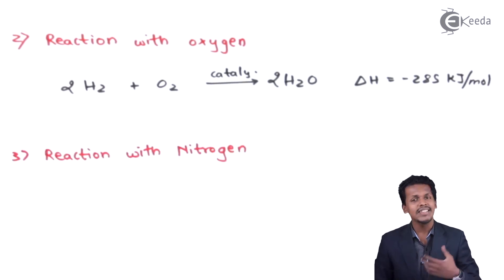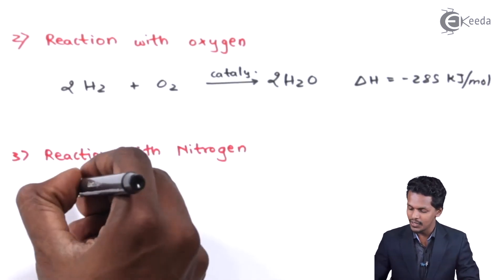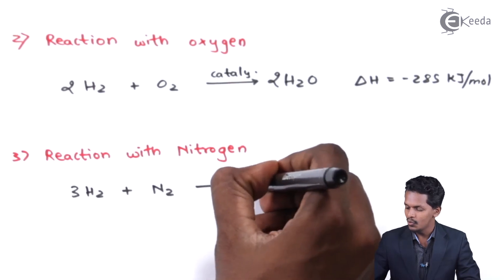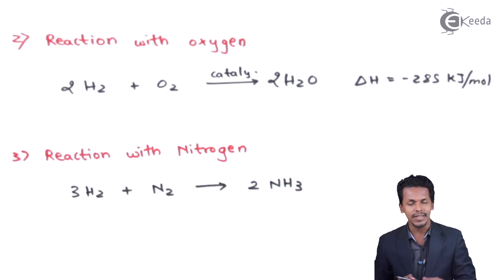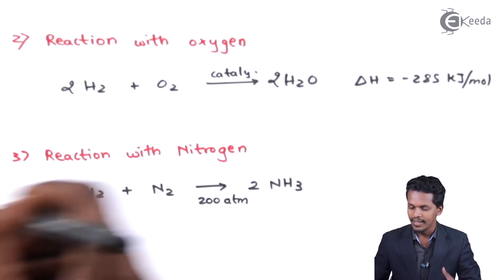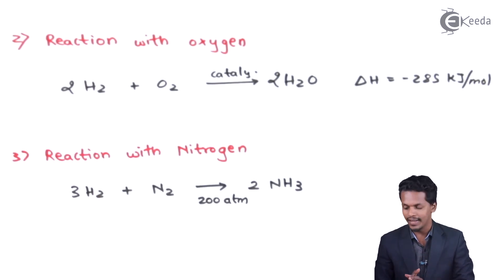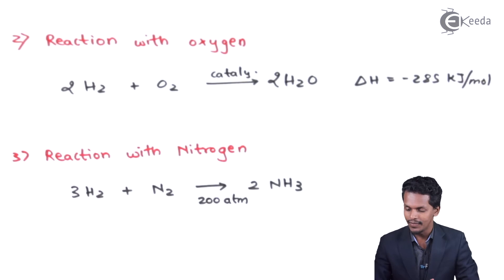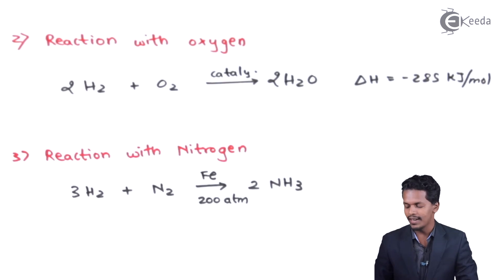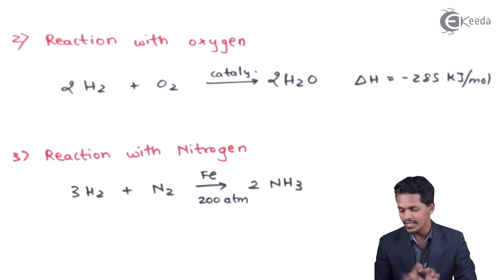Now let's move on to what happens when hydrogen is treated with nitrogen. In this reaction, 3 moles of hydrogen react with N₂ to produce 2 moles of NH₃. Since this reaction is reversible, we have to provide certain conditions — a high pressure of around 200 atm. The catalyst used is Fe, and this is how we obtain ammonia.